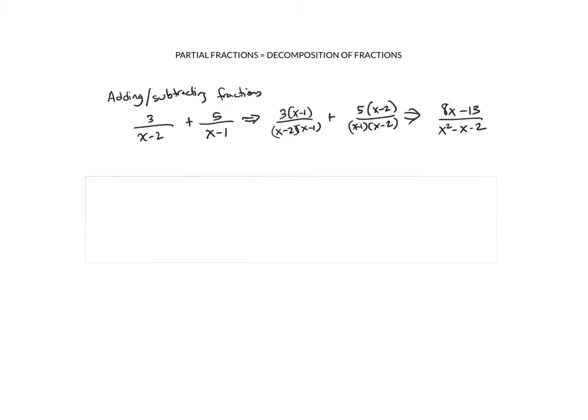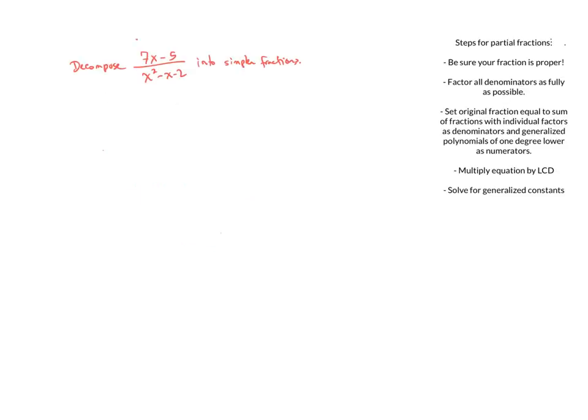What partial fractions or decomposition of fractions attempts to do is take that process and reverse it. Instead of starting with two fractions we want to add, we start with the sum and break it down into the fractions that were added together. I'm going to walk through a few examples, giving you the steps in the first, second, and third example all the way through.